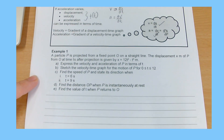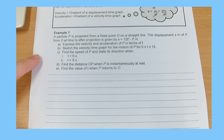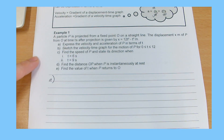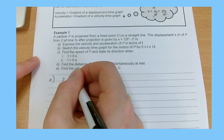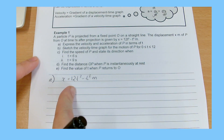Let's look at this example. Particle P is projected from a fixed point O on a straight line. The displacement x of P from O, t seconds after projection, is given by x equals 12t squared minus t cubed metres. We need to express the velocity and acceleration of P in terms of t.